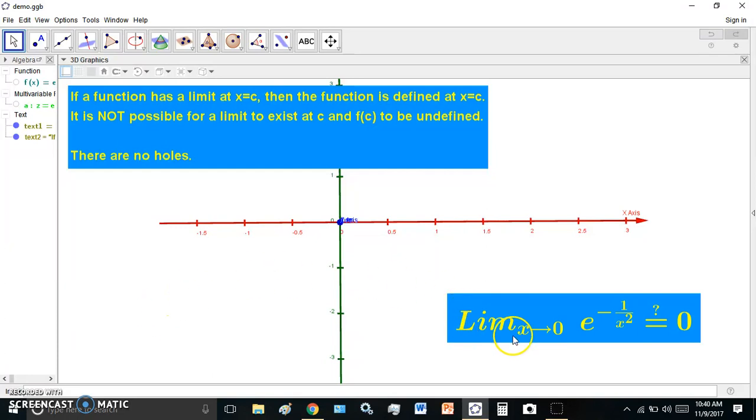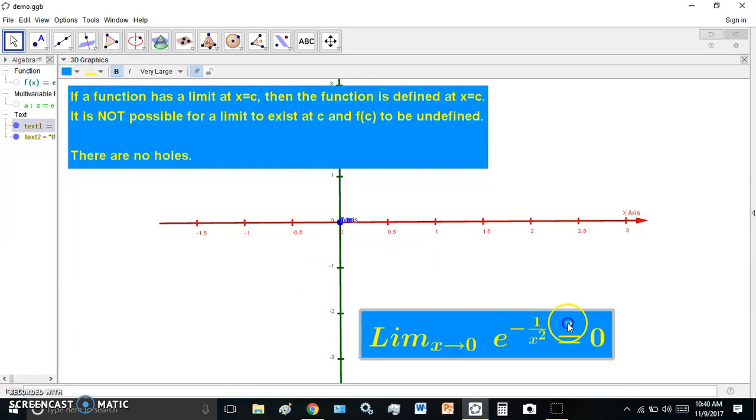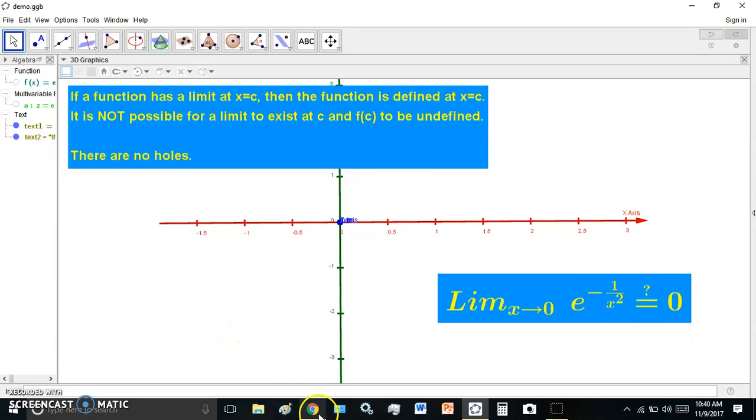So now, the orangutans came up with this function here, e to the minus 1 over x squared. And they claim that it has a limit at x equals 0, which is 0. And naturally, if you go to Wolfram Alpha Computational Engine, they'll say the same thing. And I'm going to show you now that that's not true.